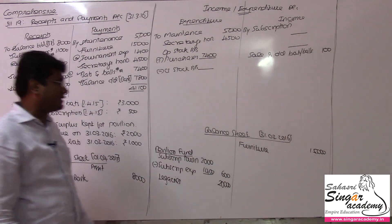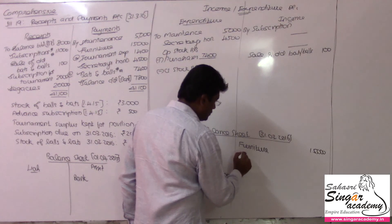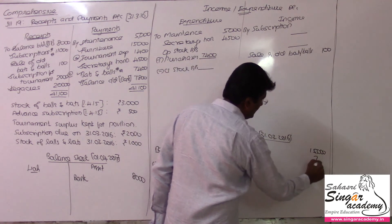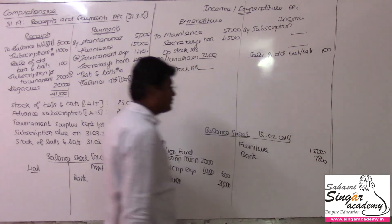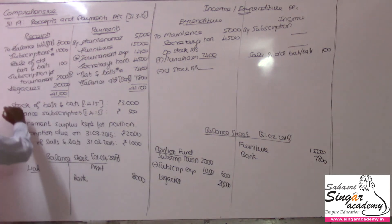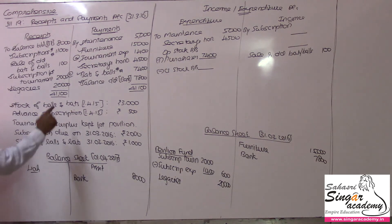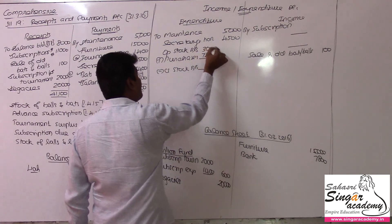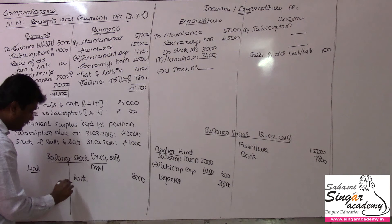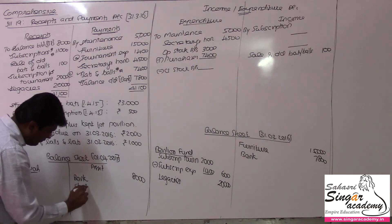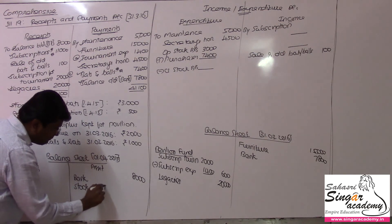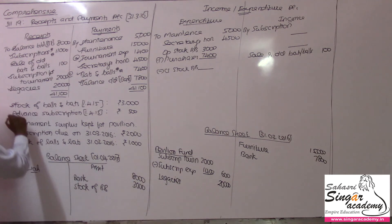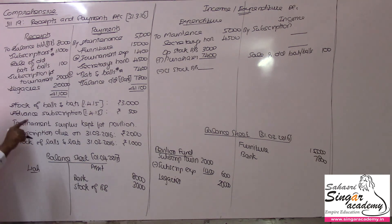Closing balance: bank account will go to the asset side of the balance sheet — bank balance at the year end is 7,800. Opening stock of bats and balls at the beginning — value being 3,000 rupees from the previous year end.